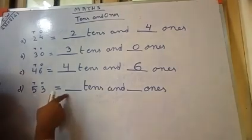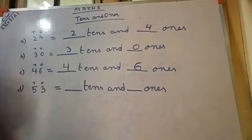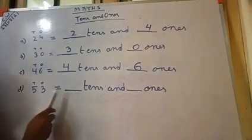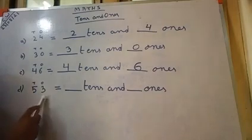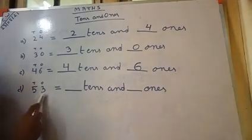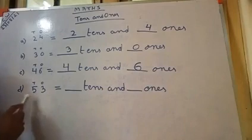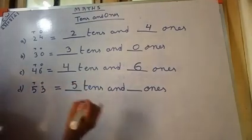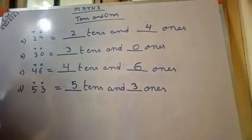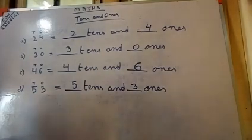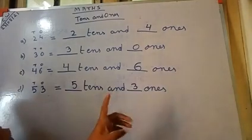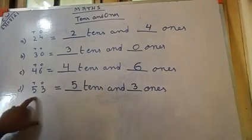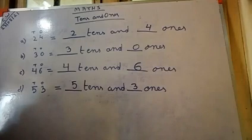Suppose the number is 53. Here it is written dash tens. So we will see the tens place number. The tens place number is 5. So we will write 5 here because 5 is at the tens place, not 3. You will not write 3 here — that would be wrong because 3 is not in the tens place, it is in the ones place. So you will write 5 tens and 3 ones. 5 is in the tens place and 3 is in the ones place. It is very easy.